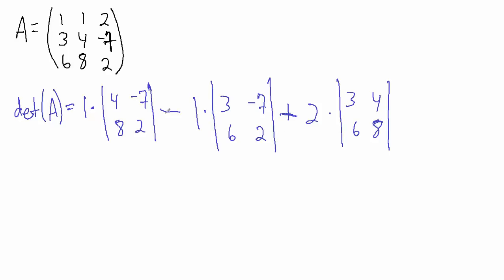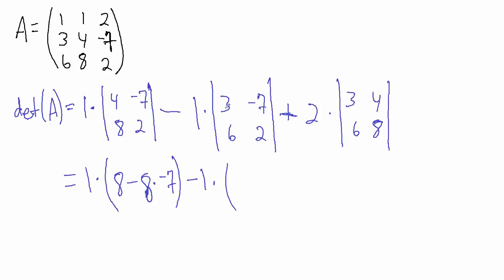Now, this is not the only way we could have done this, and we'll talk more about that later after we've found what the determinant is. So continuing — 1 times the determinant of the 2x2 matrix: 4, negative 7, 8, and 2. The determinant is going to be 4 times 2, which is 8, and then we subtract 8 times negative 7. Then here we have minus 1 times this determinant, which is 3 times 2, which is 6, and then we're subtracting 6 times negative 7. And then plus 2 times what's going on in here: 3 times 8 is 24, and then we're subtracting 6 times 4, which is 24 again.